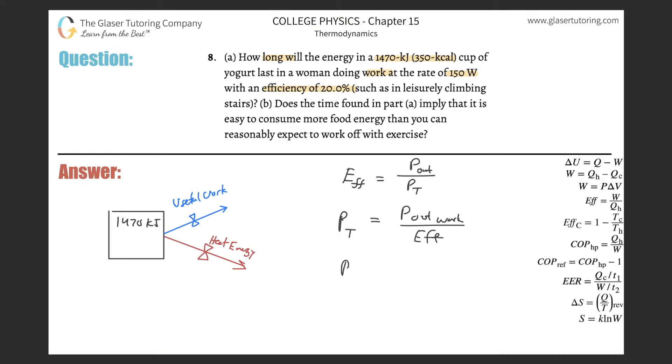The useful work output is 150 watts divided by the efficiency of 0.2. So the total power - the total metabolism rate - is 750 watts, aka joules per second.